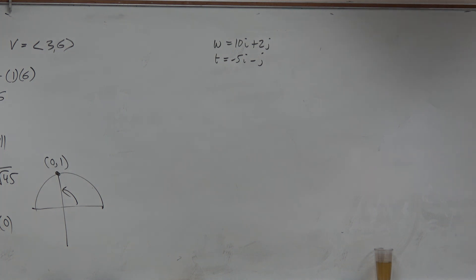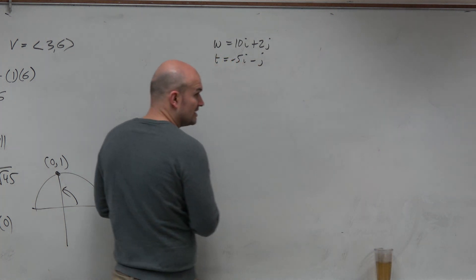The dot product is equal to 0. You have two vectors that are orthogonal. So the first thing you always want to do is check the dot product, right? It's not that bad.